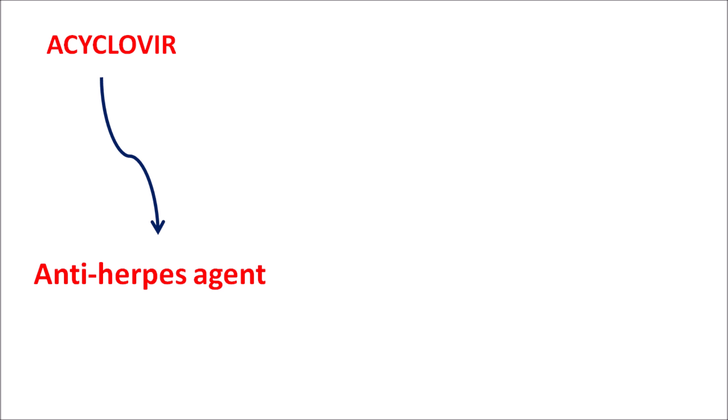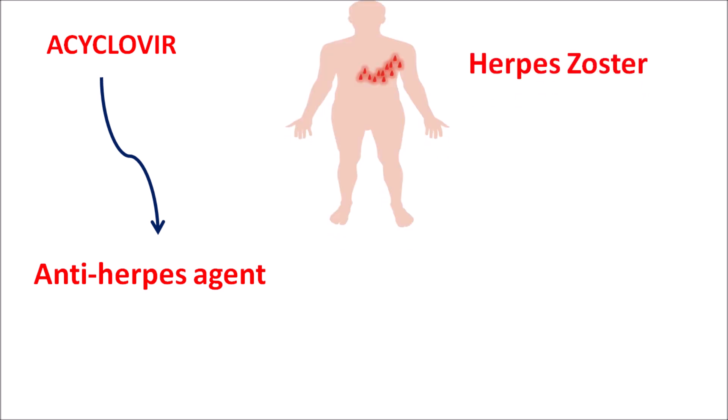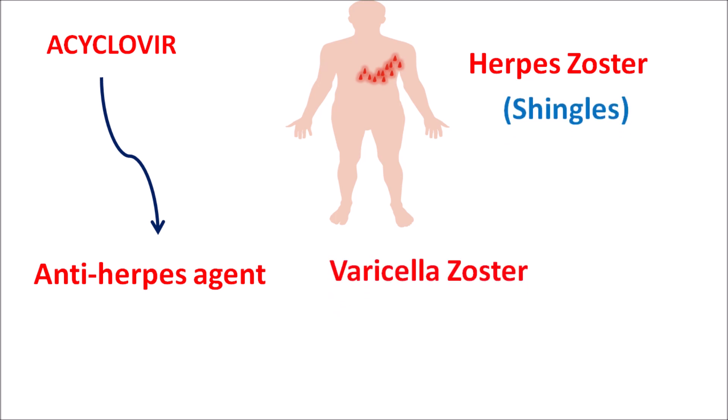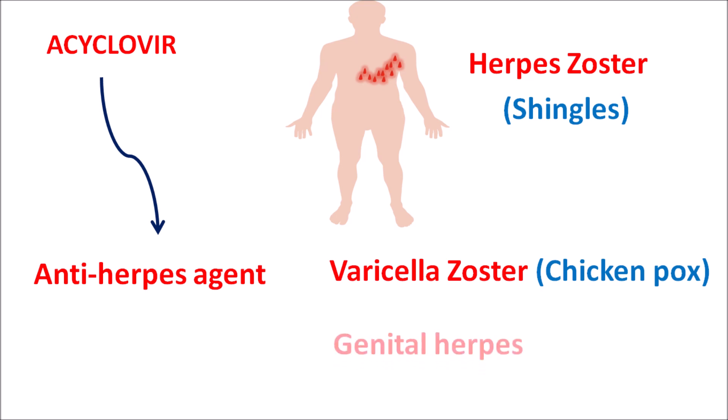Acyclovir can be used in the treatment of herpes zoster infection, which produces shingles. Similarly, varicella zoster infection, which produces chickenpox, and genital herpes infections — in all these herpes viral infections acyclovir can be used. However, this drug is not effective against cytomegalovirus infections.